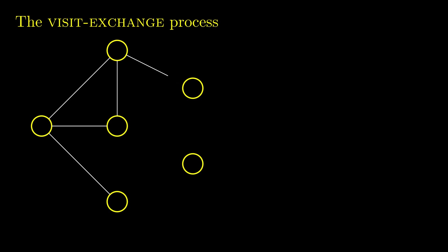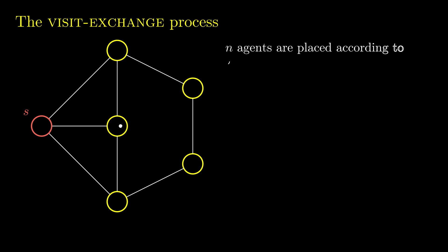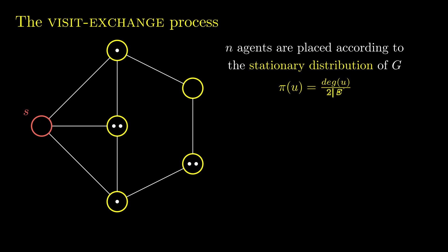Let's start by introducing the protocol that we call visit exchange. In a given graph G, a source vertex S is initially informed, shown in red here. N agents are distributed according to the stationary distribution of G, which means that the position of each agent is random, proportional to the degree of each vertex.